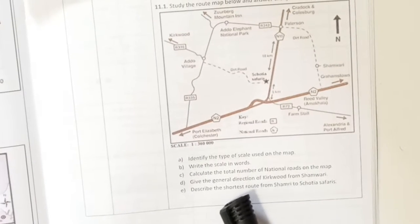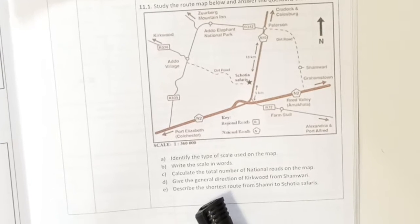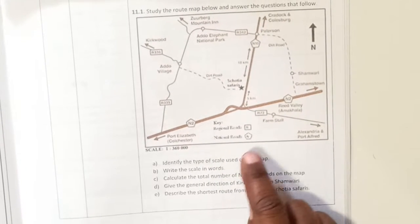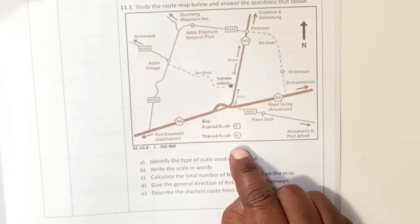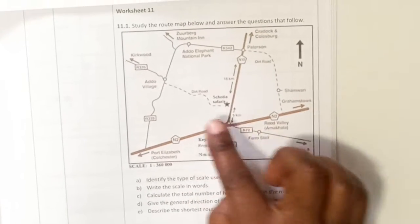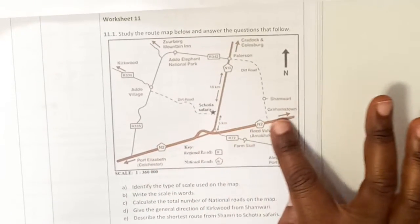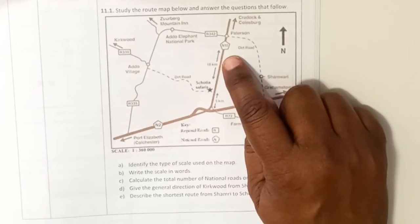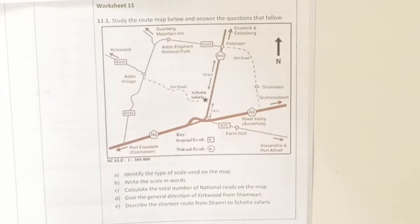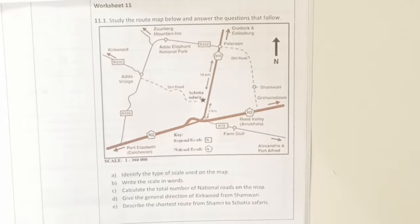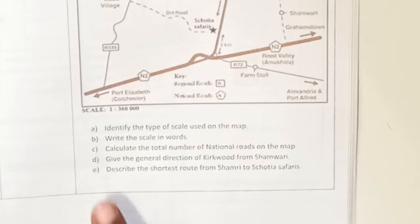Question C says: calculate the total number of national roads on the map — essentially, count them. Remember, a national road has a pentagon shape with an N inside and a number, like N2. Looking at the map, we also see N10 — a different national road. So we have two national roads in this map.